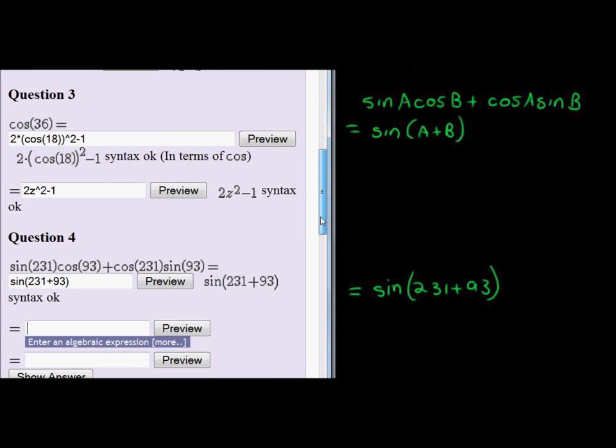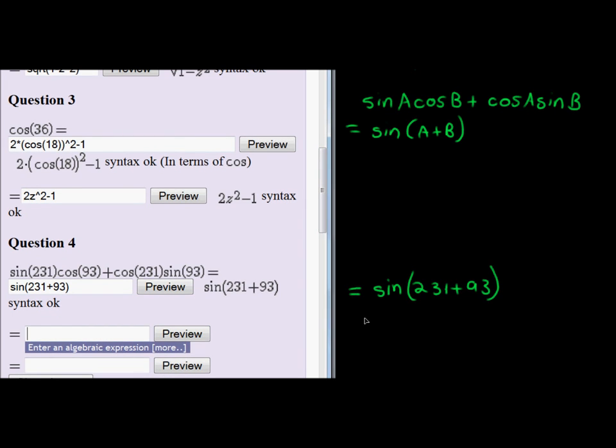Next up, we need to actually evaluate that. Sin(231) plus 93. That is actually equal to sin(324). Okay. Oh no. Sin(324). Well, again, it is difficult to work with this angle, so you work with a simple acute angle. So, we're going to say, this is the same as sin(360 - 36).